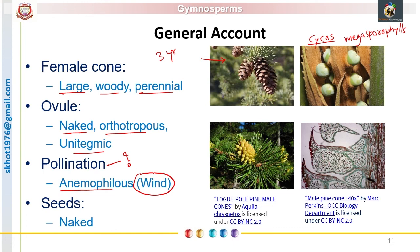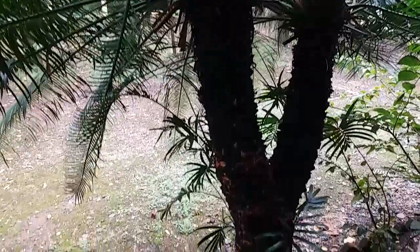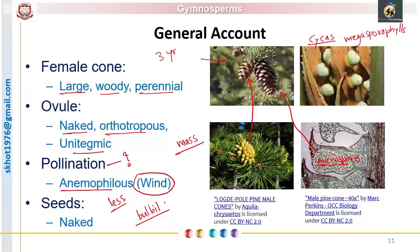In anemophilous pollination, seed set will happen only when pollen grains reach the receptive ovule. If microspores do not reach the ovule in time, there will be no seed setting. With a low number of seed sets, these plants cannot migrate or occupy space away from the mother plant. Most gymnosperms reproduce with the help of bulbils, and bulbils cannot move far from the parent — that is why gymnosperms are now restricted to certain spaces on the earth.